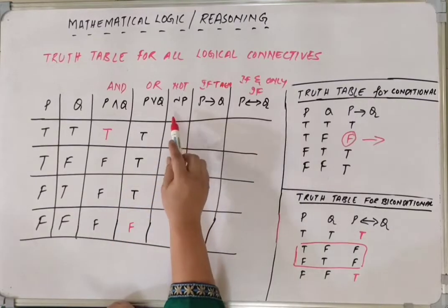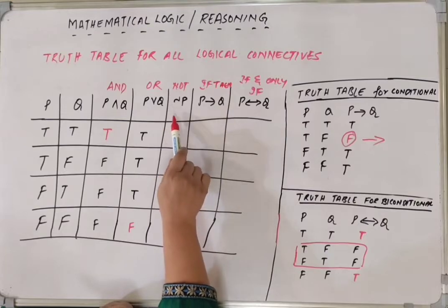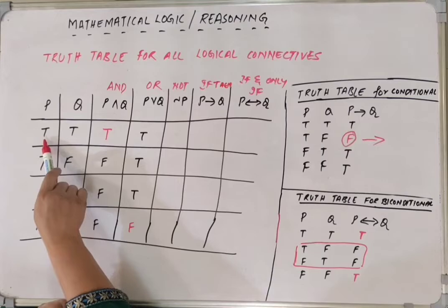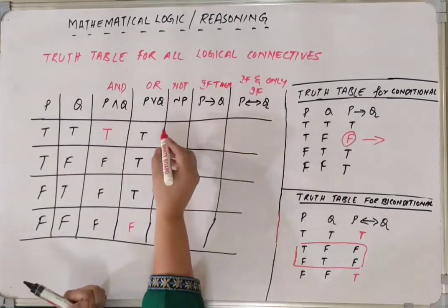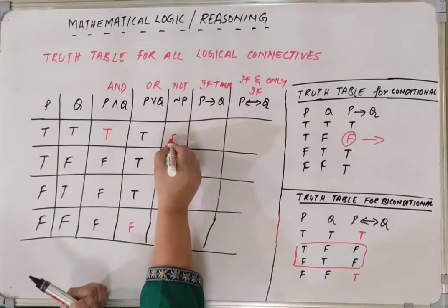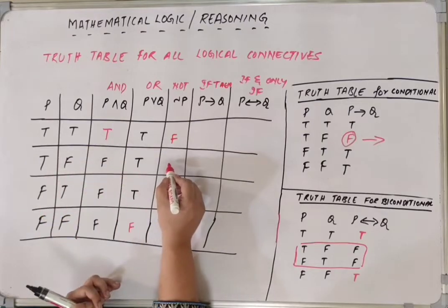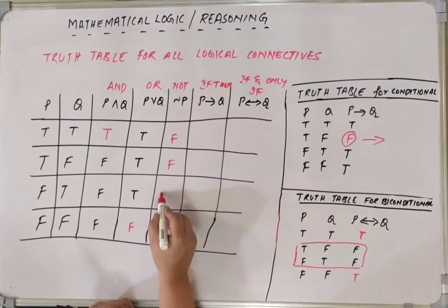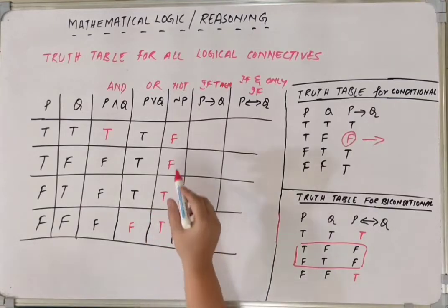Now let's come to negation. Negation of P is nothing but the reverse of P. So if P is true then negation would be false. Now P is false so negation of P is going to be true and true here. This is pretty simple.